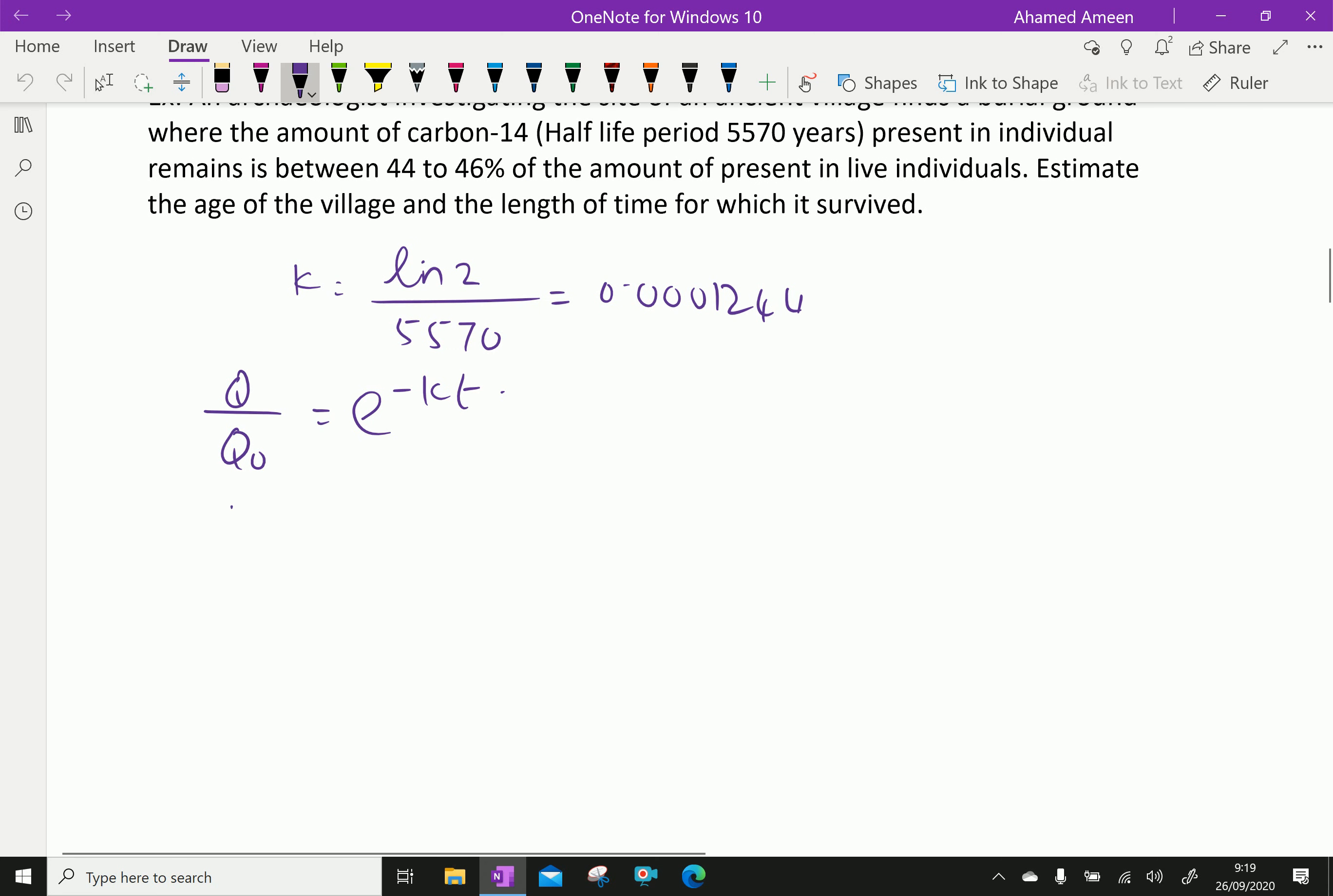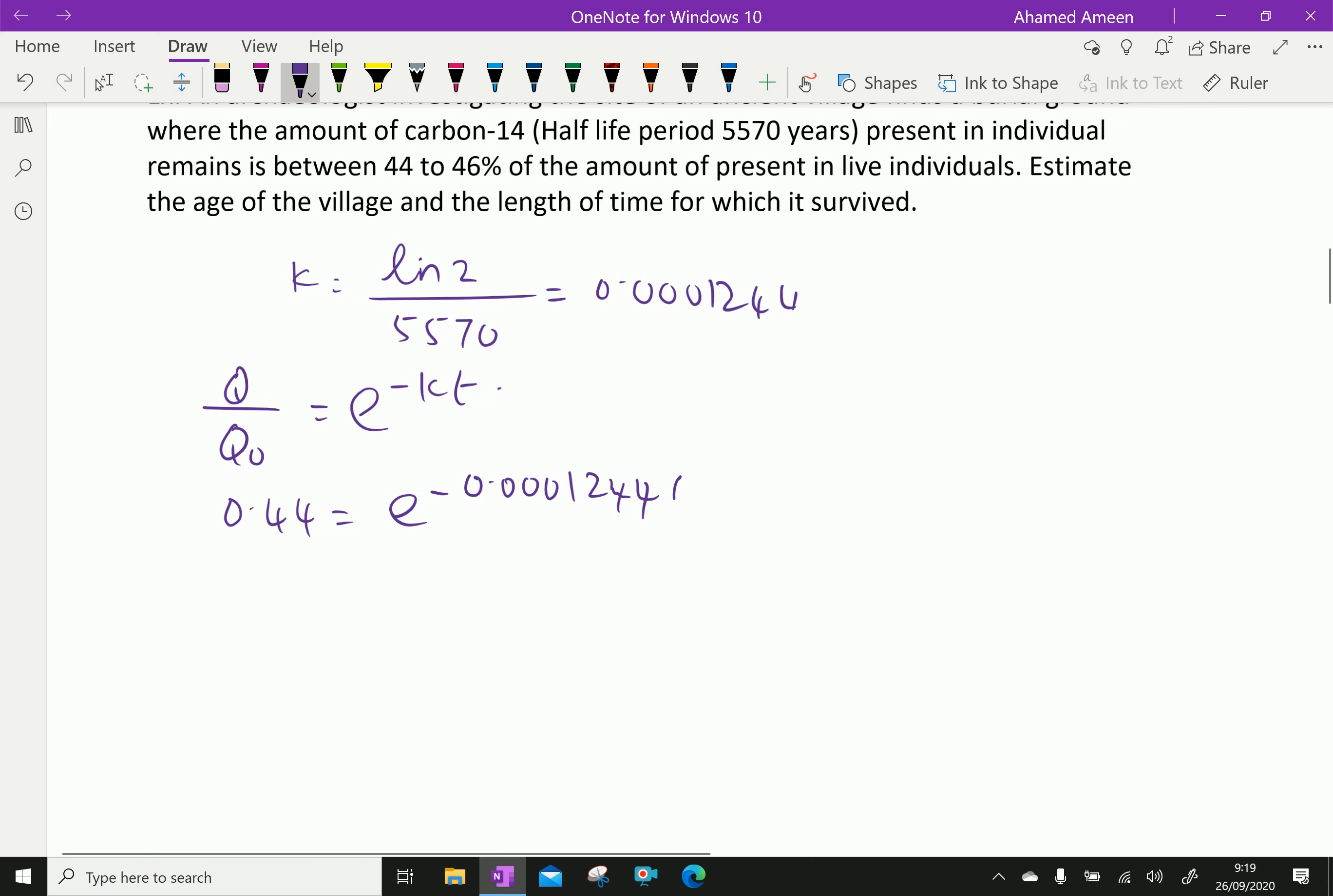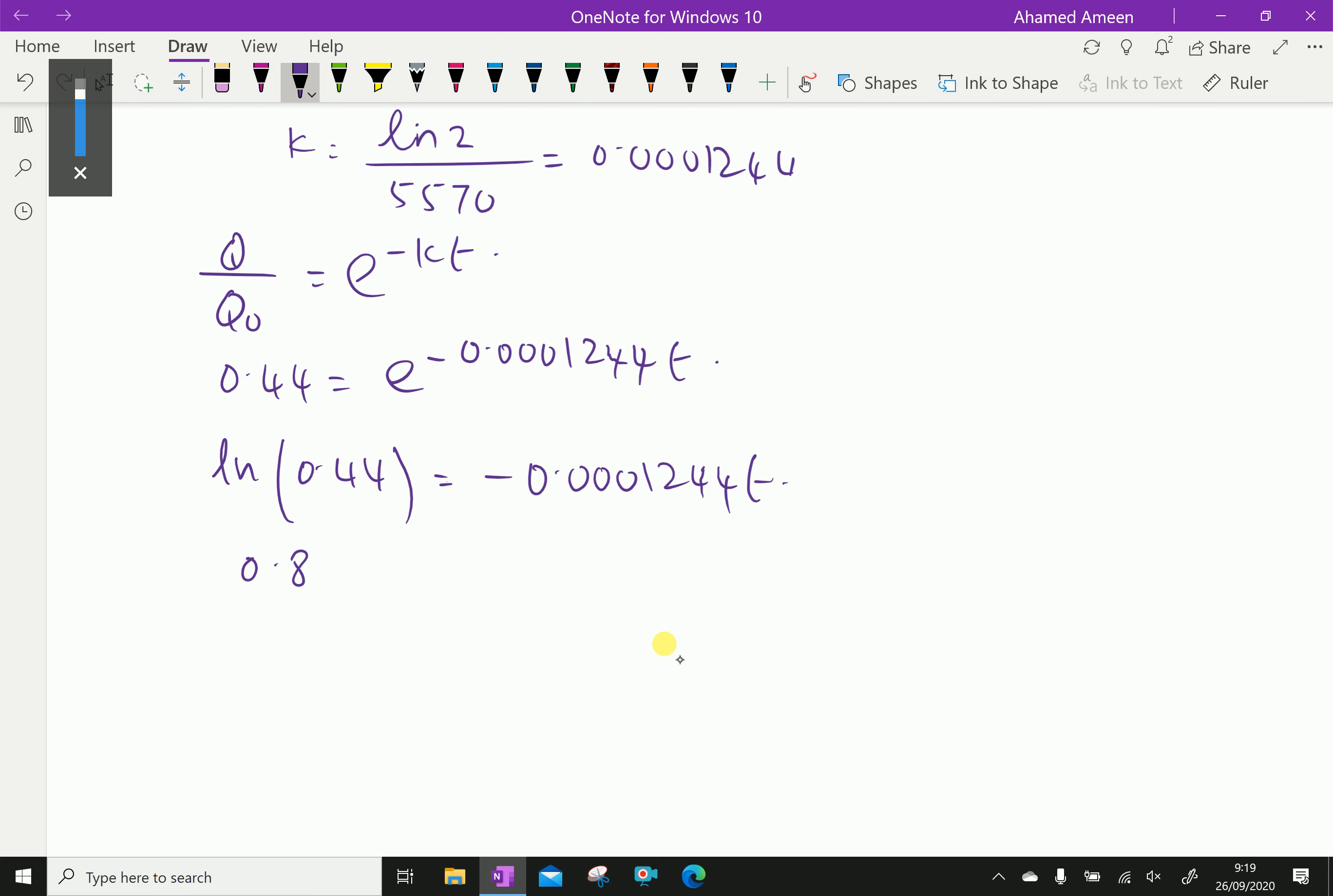For 44 percent, Q by Q0 equals 0.44 equals e to the power minus 0.0001244t. Taking the natural log, minus ln of 0.44 is 0.820981 equals minus 0.0001244T.